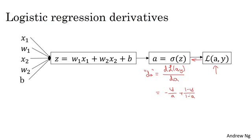I encourage you to look up the formula for the loss from the previous slide and try taking the derivative with respect to a using calculus. But if you don't know enough calculus to do that, don't worry about it. Now, having computed this quantity dA, the derivative of your final output variable with respect to a, you can then go backwards.